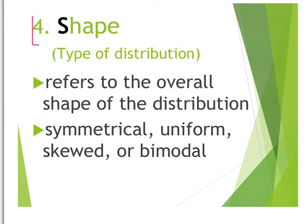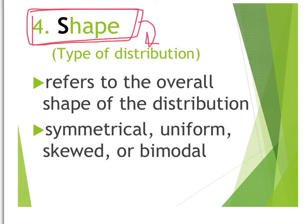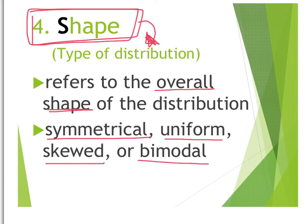Lastly, we have to consider the shape when describing graphs. Remember, we just talked about types of distribution — that's really what types of distribution describe: the shape. So that's the overall shape of your distribution. Is it symmetrical? Is it uniform? Is it skewed? Is it bimodal? Those are all terms we can use to describe it. Sometimes it will be more than one of these terms — you might have a distribution that is both symmetrical and bimodal, or uniform and symmetrical. Those can overlap and you can describe it more than one way.